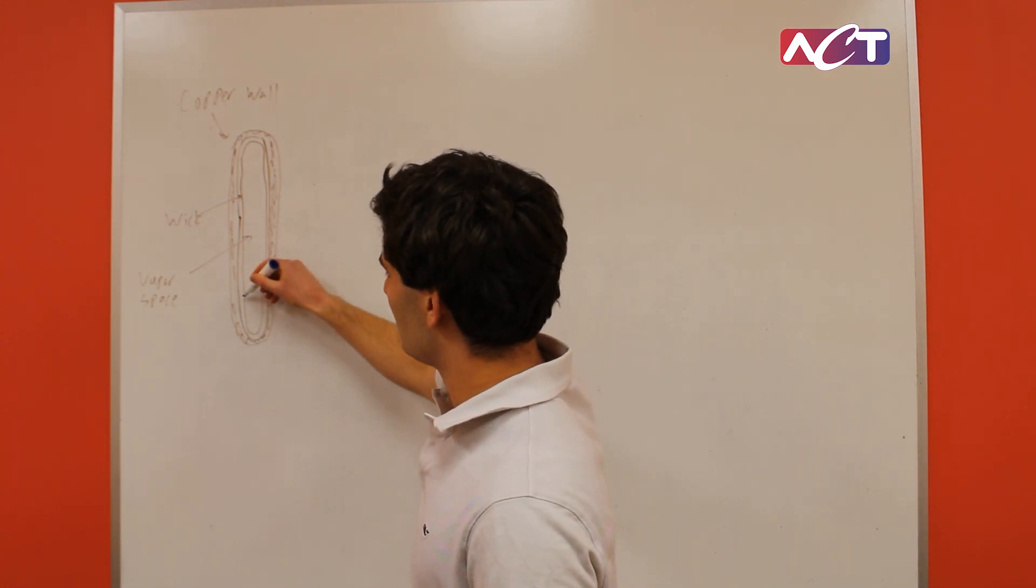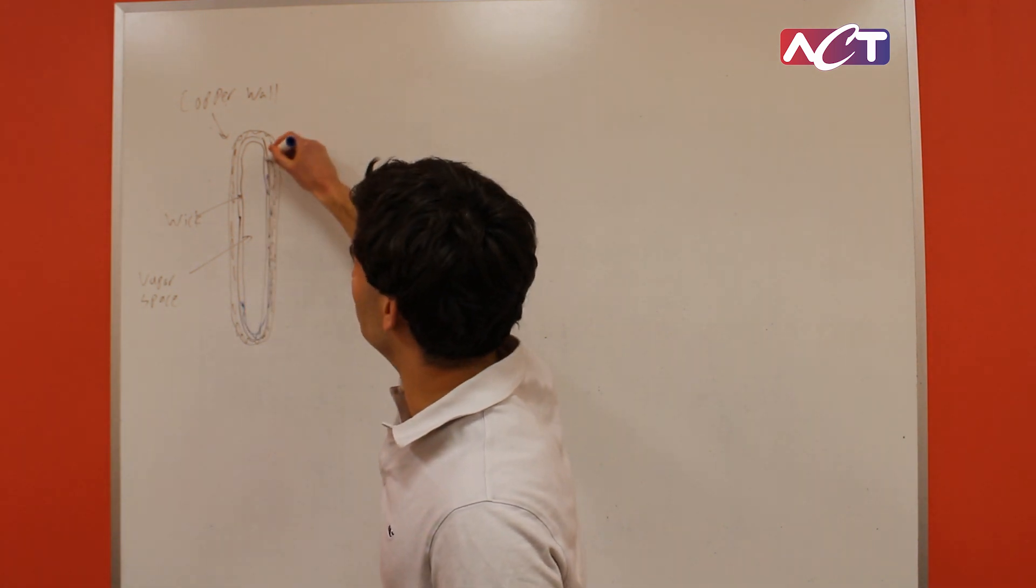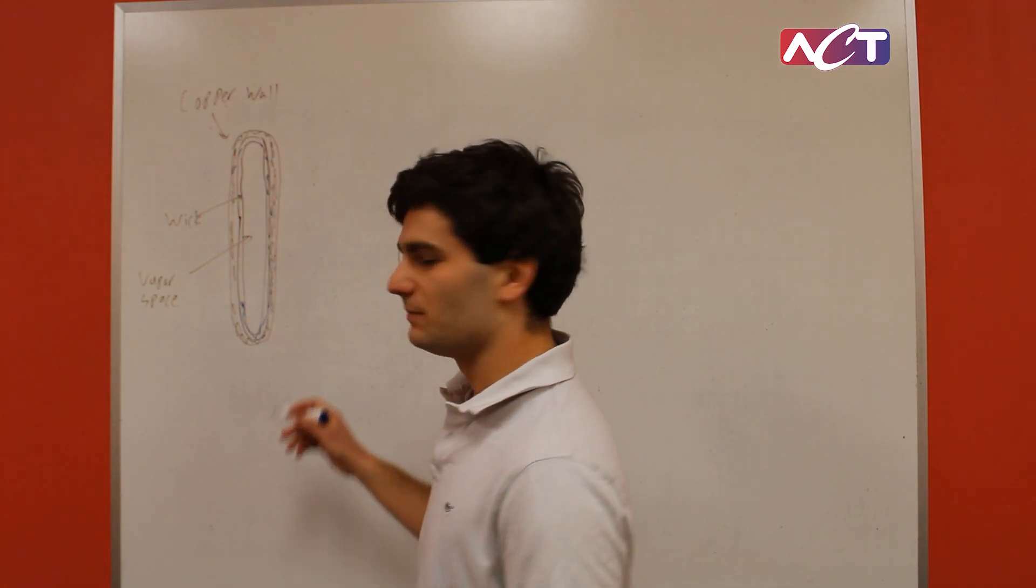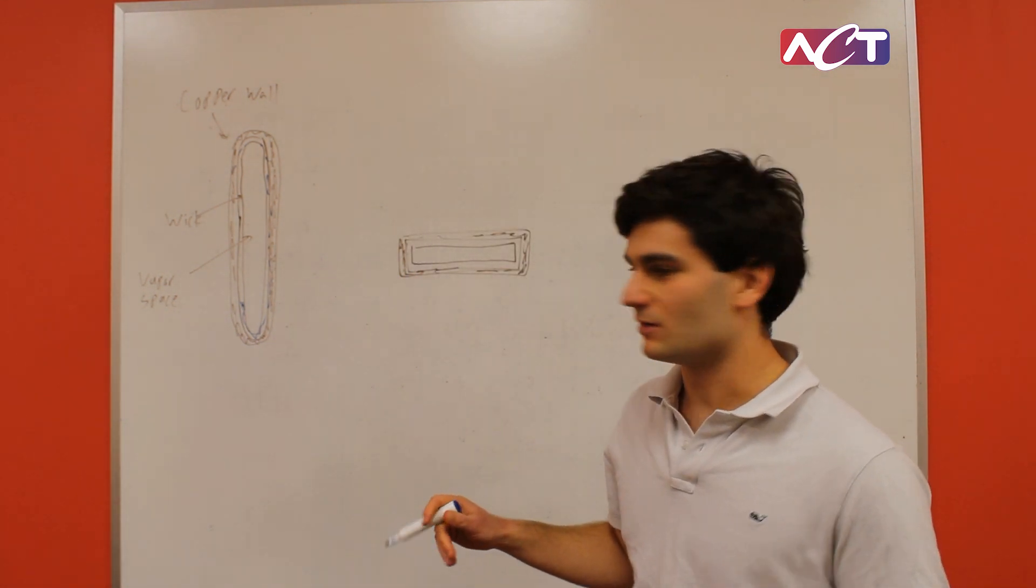And what happens is this is charged with some working fluid, typically water, and so the way heat pipes work is they're really good at transporting heat in one dimension, across a linear path.